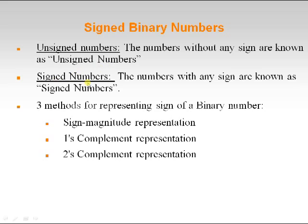Numbers with a sign are known as signed numbers. If we represent a number with a prefix of plus or minus, that number is called a signed number. The computer uses one of three methods for representing the sign of a binary number: signed magnitude representation, one's complement representation, and two's complement representation.